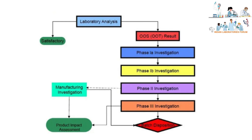This is the pictorial representation of the complete investigational process for out-of-specification. Upon identification of OOS results, the laboratory should perform the Phase 1a investigation. If there is no root cause identified in Phase 1a, the laboratory should perform Phase 1b investigation. If root cause is still not identified in Phase 1b, Phase 2 investigation should be initiated in the manufacturing unit. Upon Phase 2 investigation, Phase 3 investigation should be done to conclude the out-of-specification results.